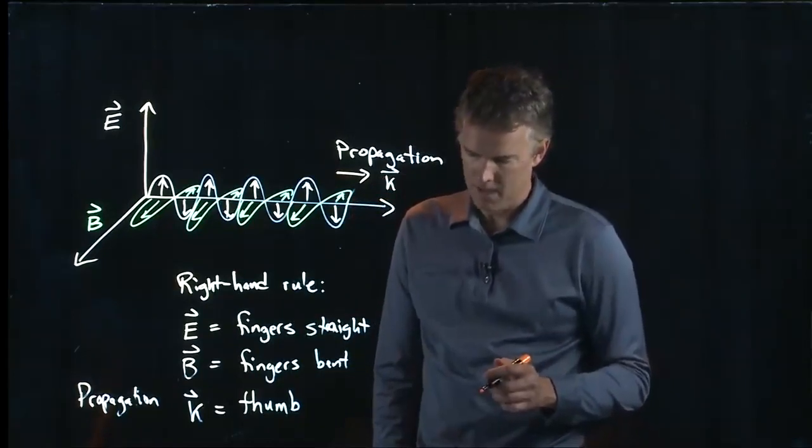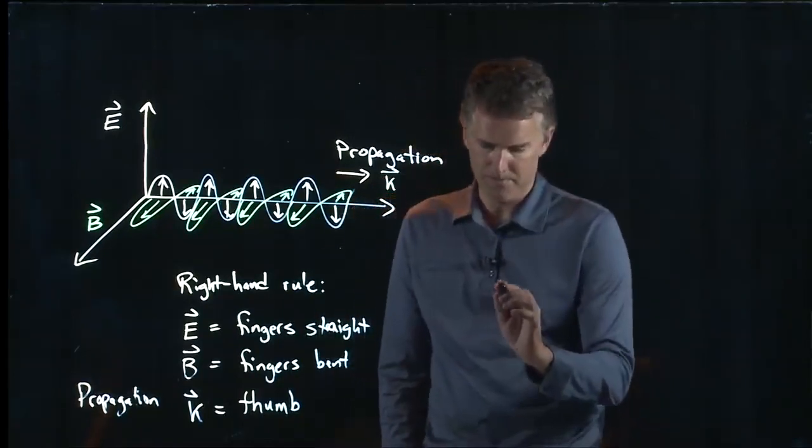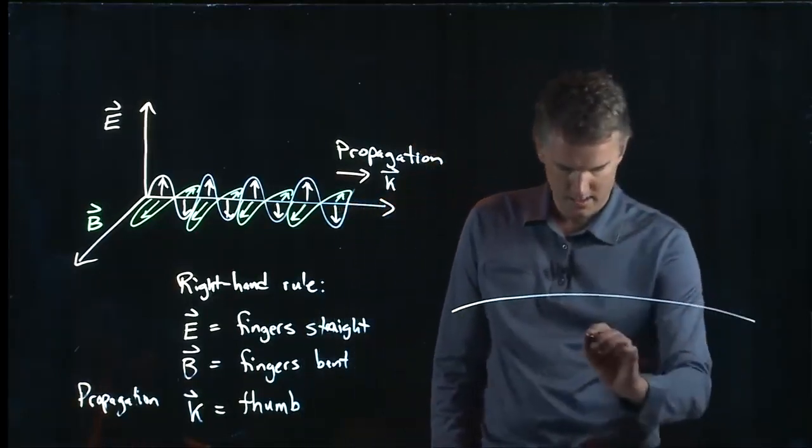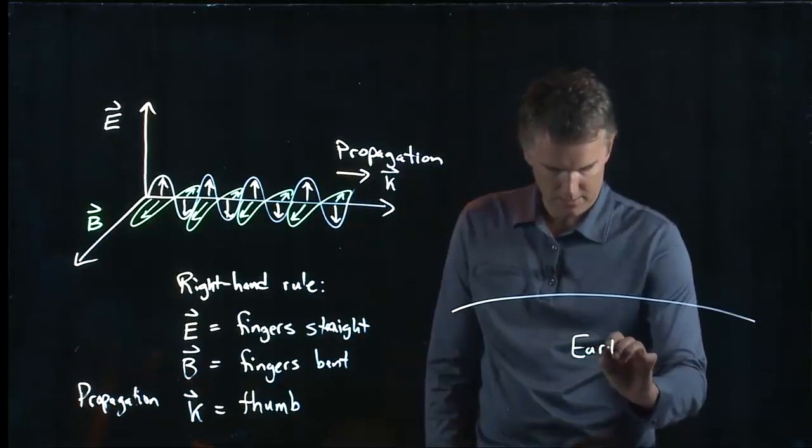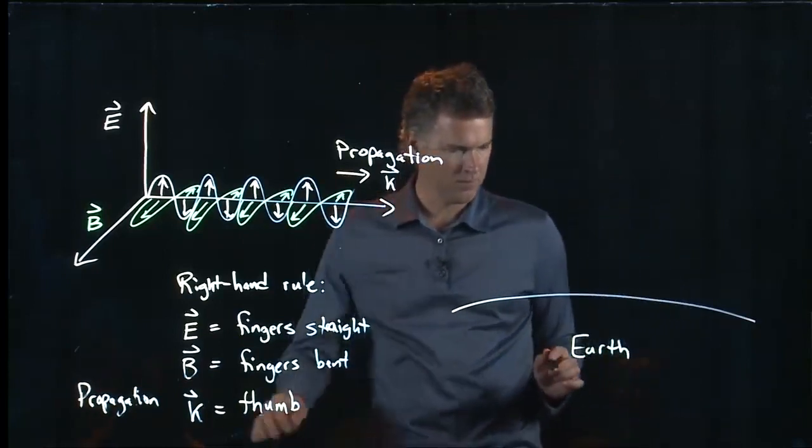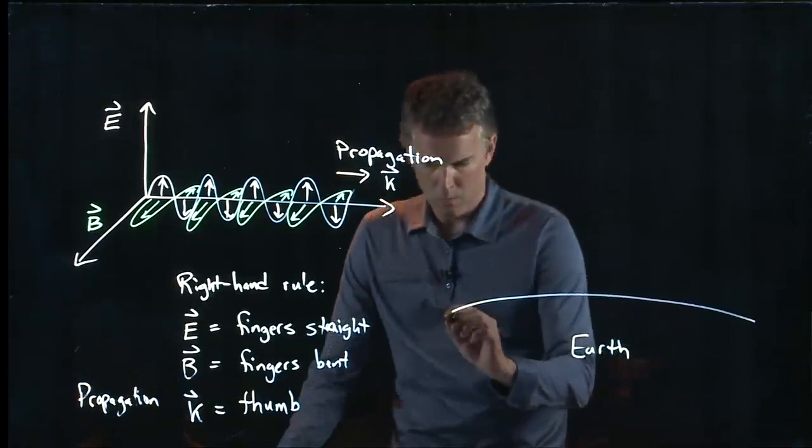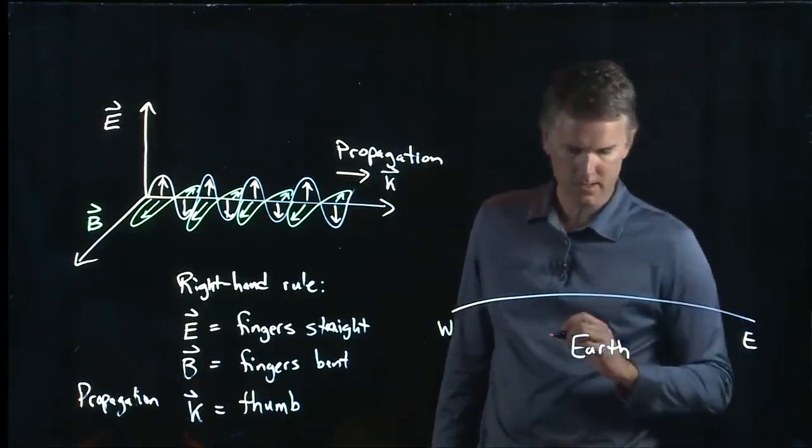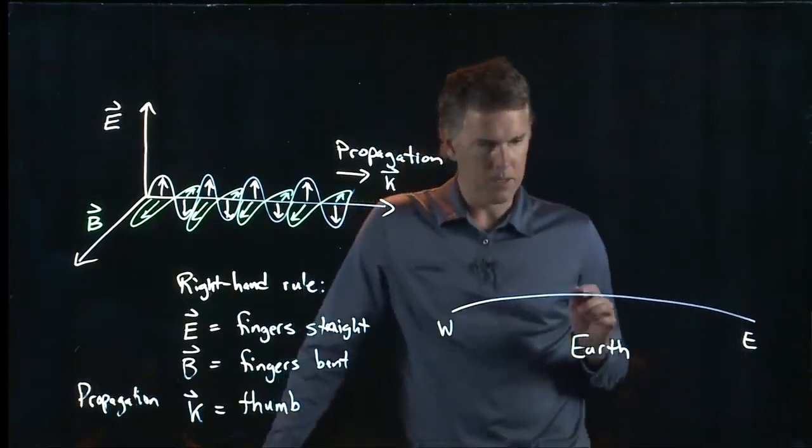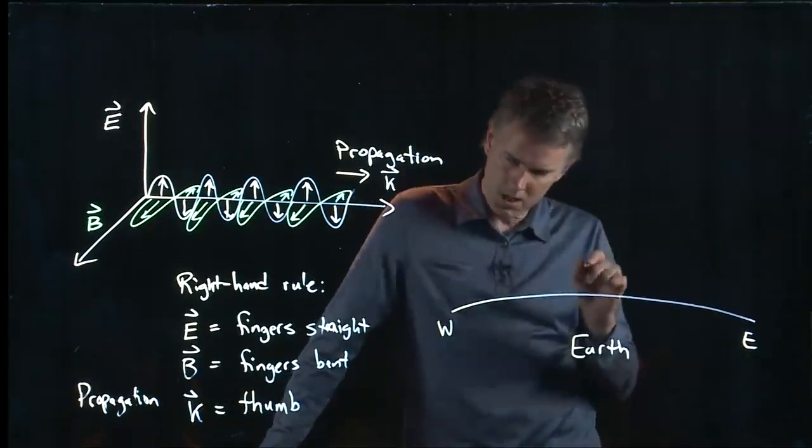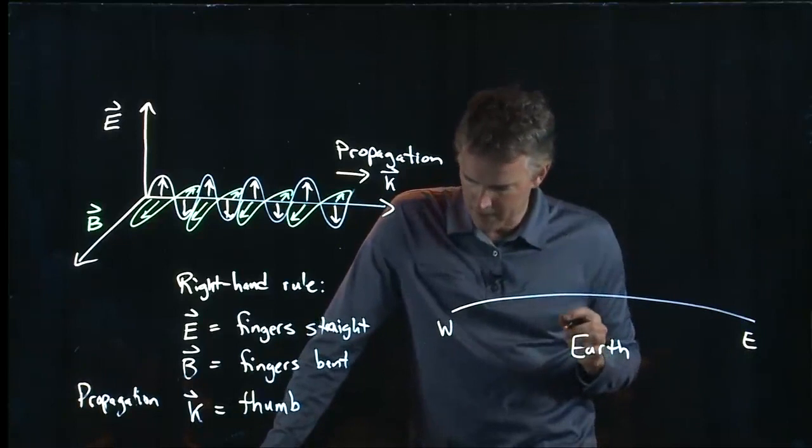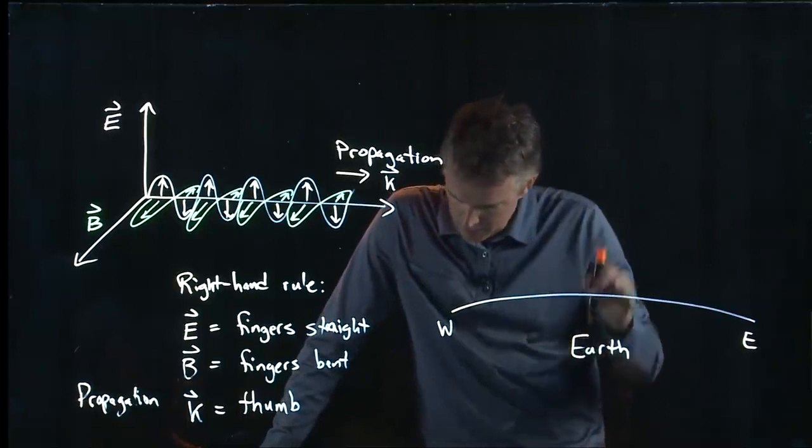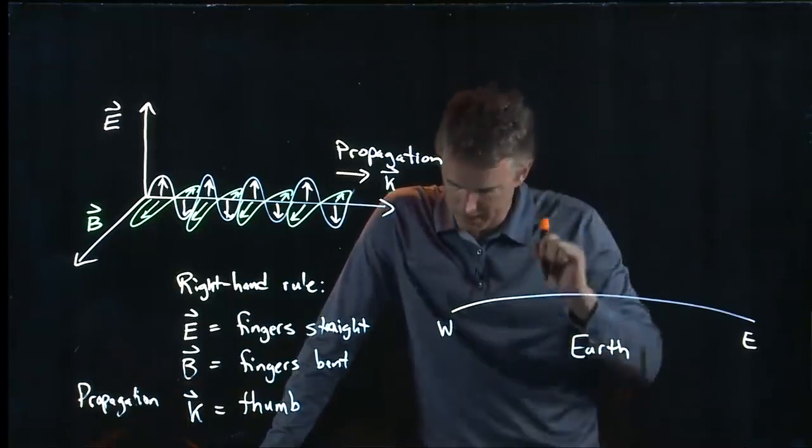All right. Well, let's see if we can draw this picture. And it might be kind of tricky to draw, but let's give it a shot. This is the earth. And we're going to say that the west is to the left. The east is to the right. That means the north would be into the screen. South would be out of the screen. And so if the wave is propagating down towards the center of the earth, it's going to be coming down this way.